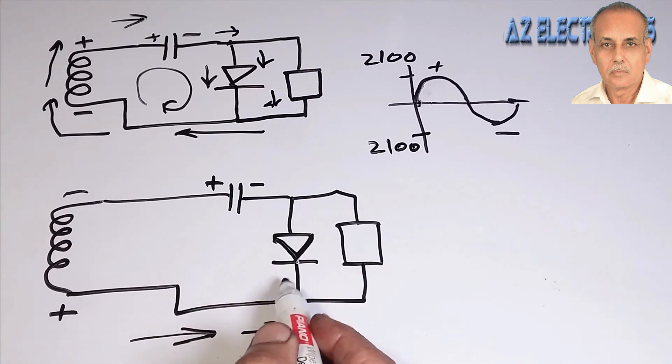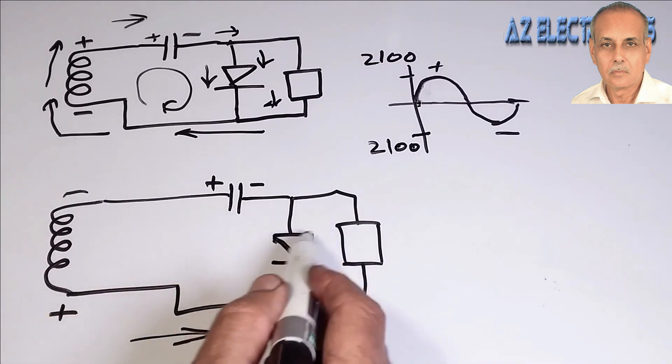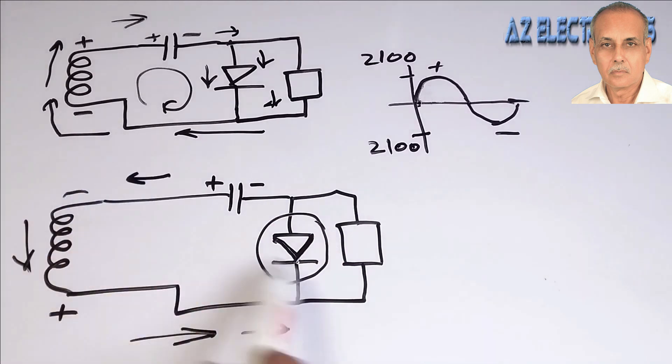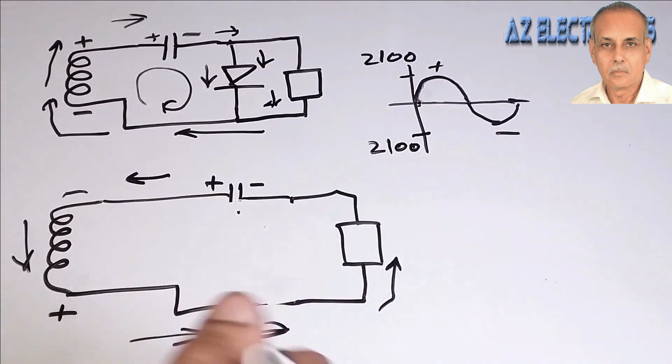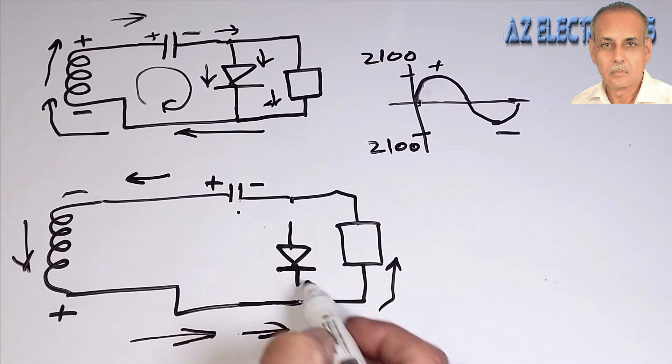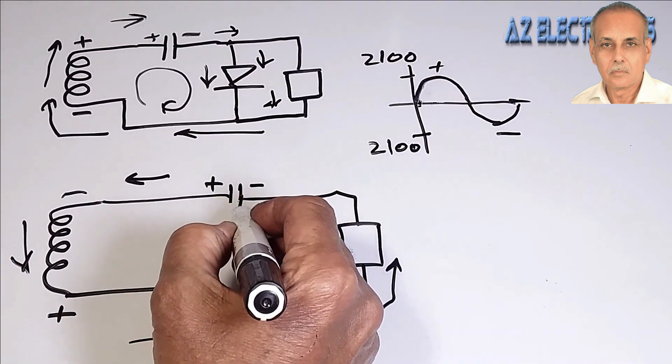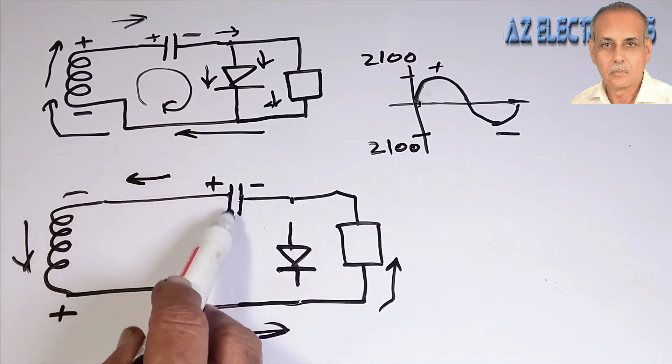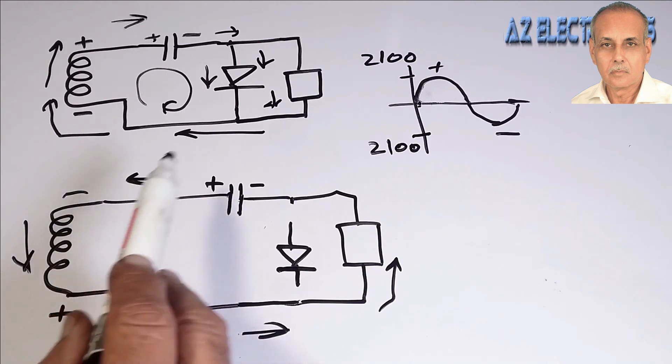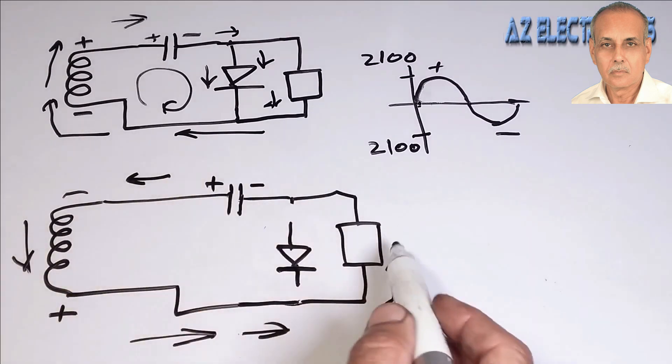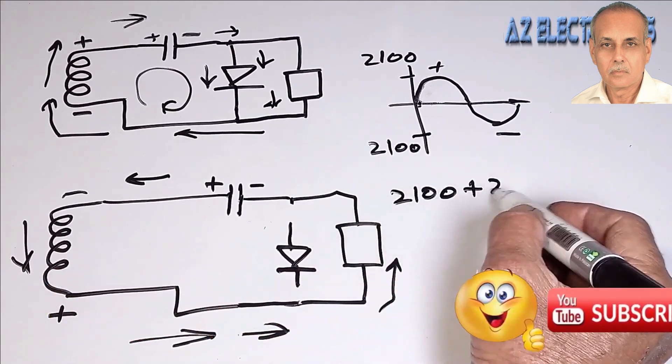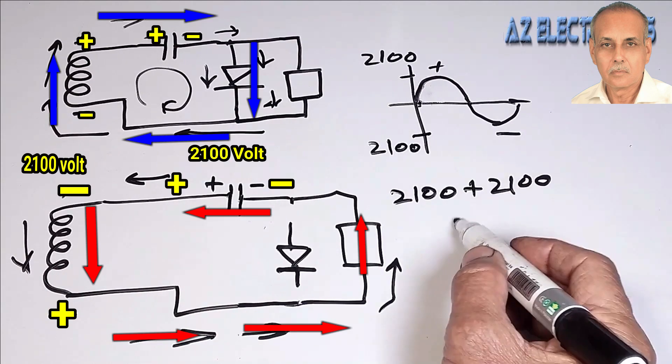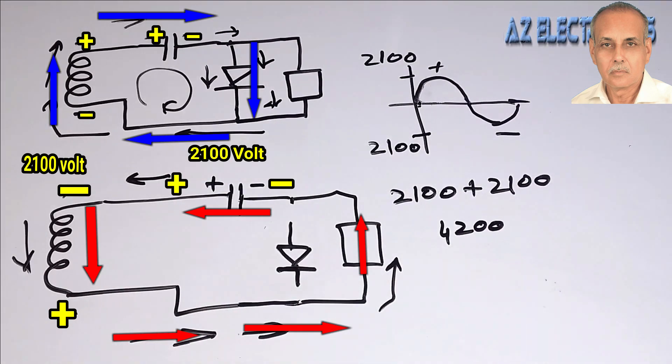The diode is now in reverse bias and no current is flowing through it. Now the voltage will pass through the load. The top end of the coil will become negative and the bottom end will become positive. The maximum voltage across the coil plus the maximum voltage across the capacitor will add up, which is practically near 5000 volts. The negative 2100 voltage across the coil will accumulate the 2100 voltage across the capacitor, and negative 5000 volts will now flow through the magnetron.